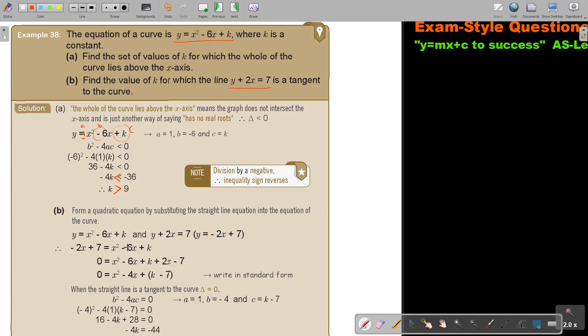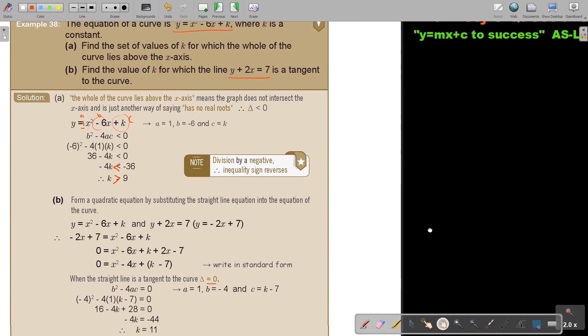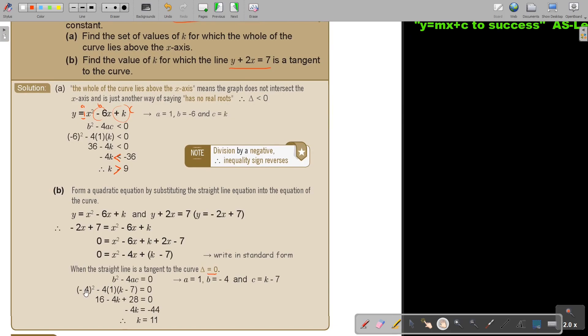So I'm just taking this and I substitute it in there. So this and this, I just showed you, I think I did it, to make Y the subject of the formula. And then I substitute it in and now I write it in standard form. So when the straight line is a tangent to the curve, then the discriminant will be equal to 0. So I just fill it in and then if the value of K is 11, then it will be a tangent to the curve. It's just playing around with nature of roots.